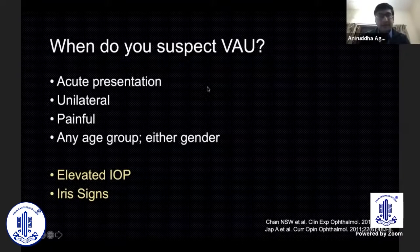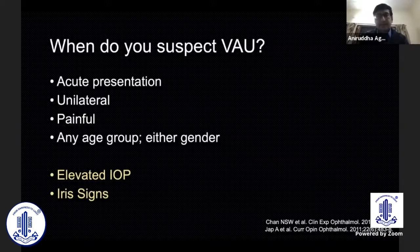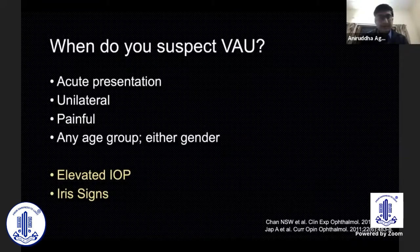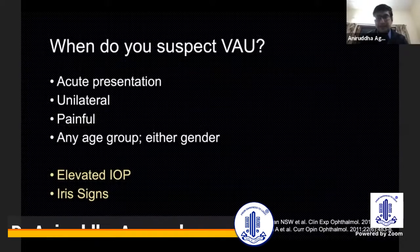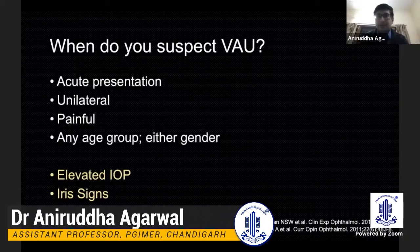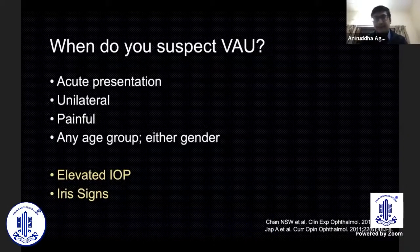At the outset, we all know when do you suspect viral anterior uveitis in a patient. A typical patient would be one who has an acute presentation, has a unilateral disease, has a painful eye, and the patient could be of any age group, either gender. And two most important signs are elevated intraocular pressure and iris signs such as atrophy and sectoral defects.